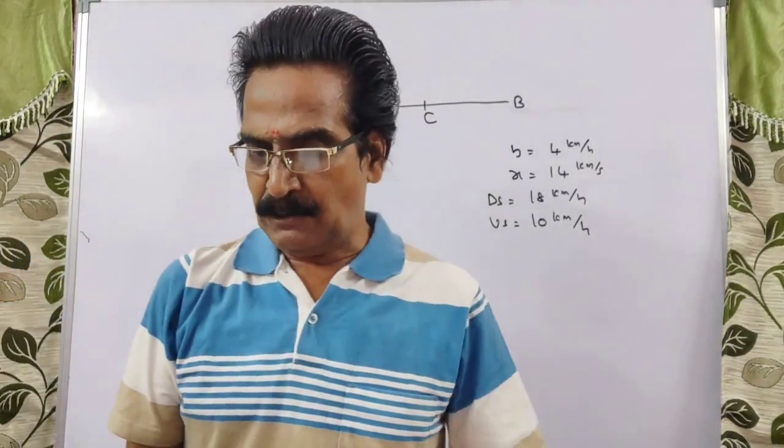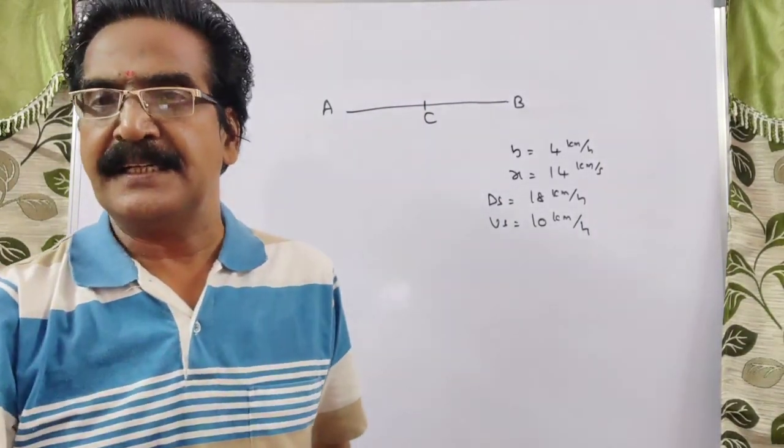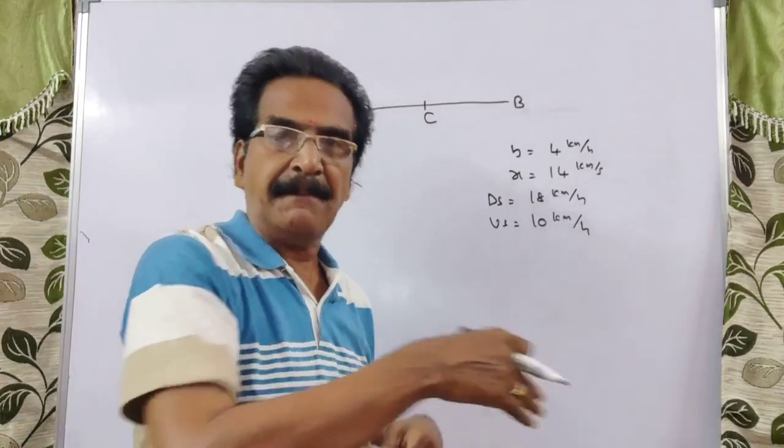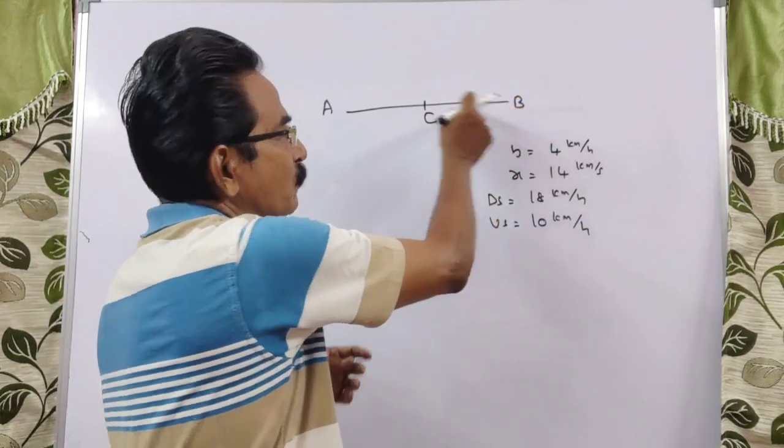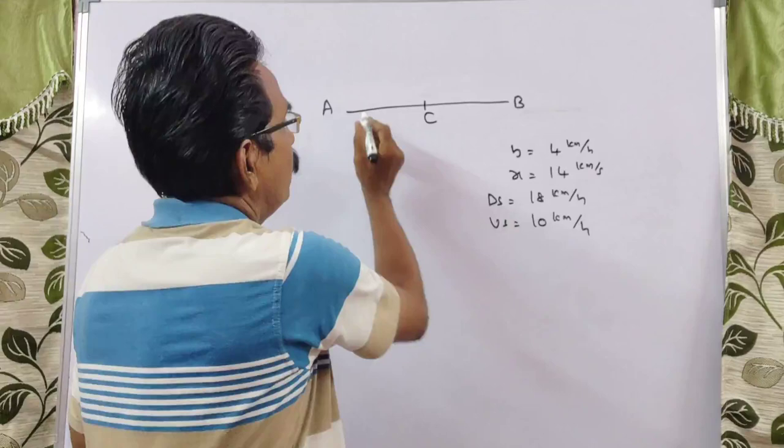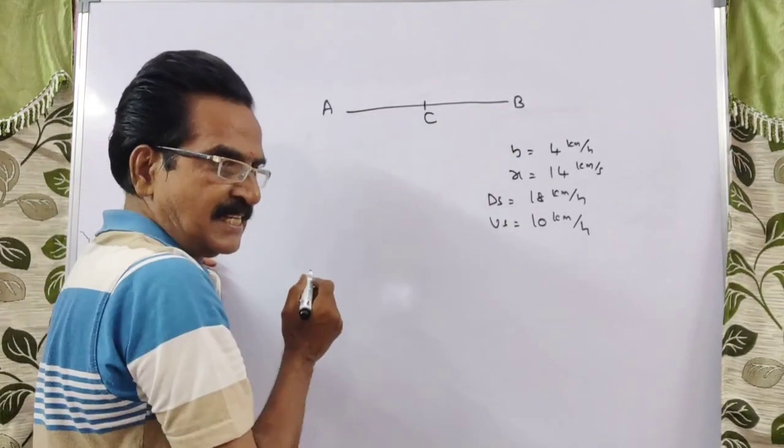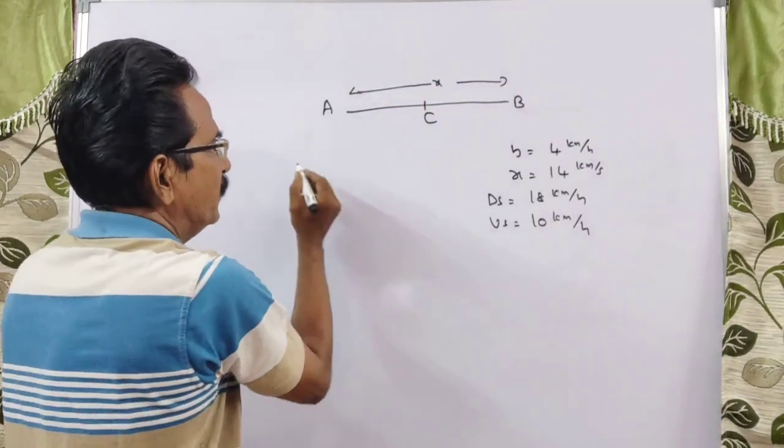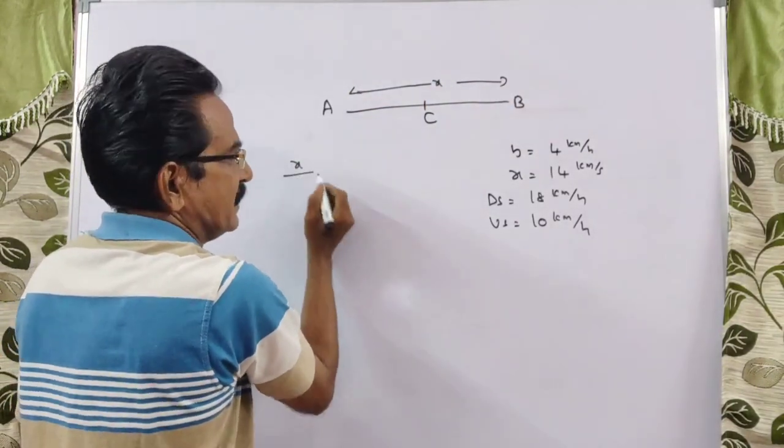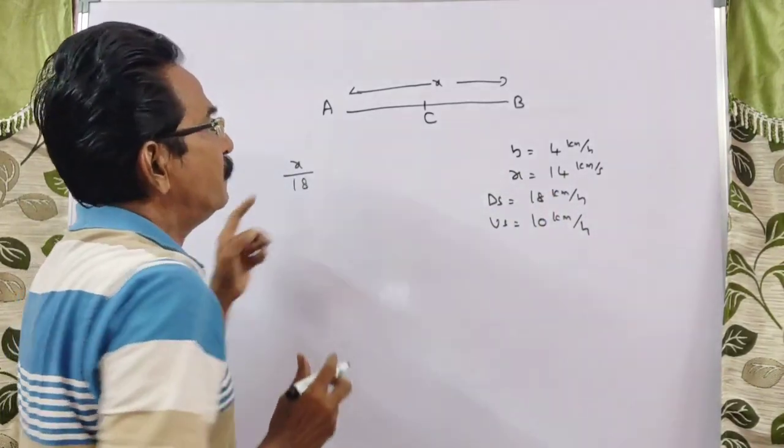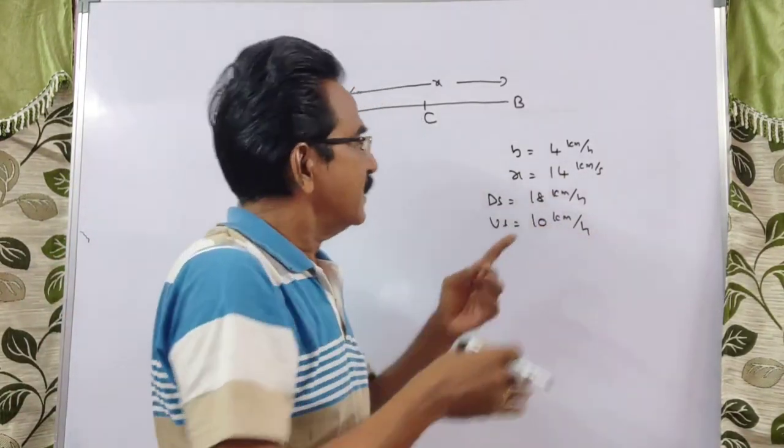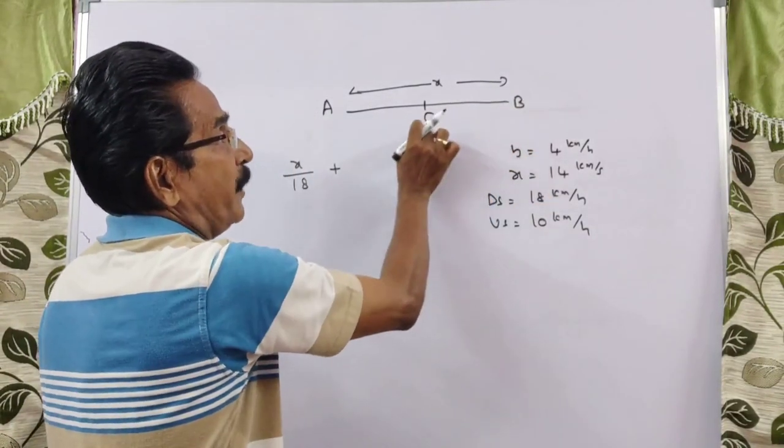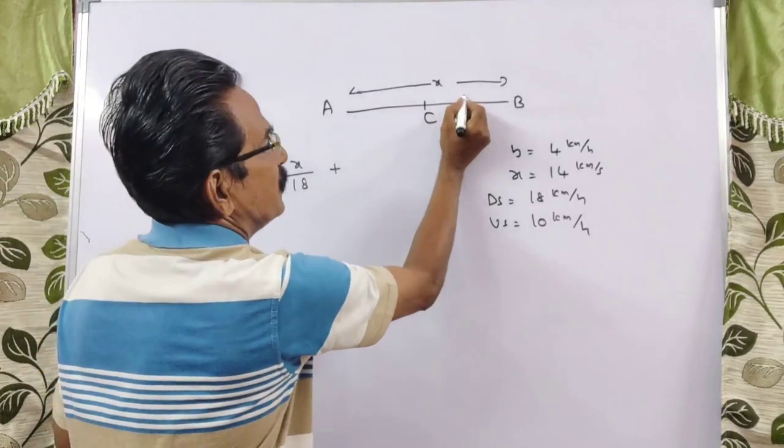Now the question is, what is the distance between A and B? Here the boat travels from A to B in downstream, from B to C in upstream. So if the total distance is x, the boat travels distance x in downstream velocity, plus return, it comes to point C that is midway, so this is x by 2.